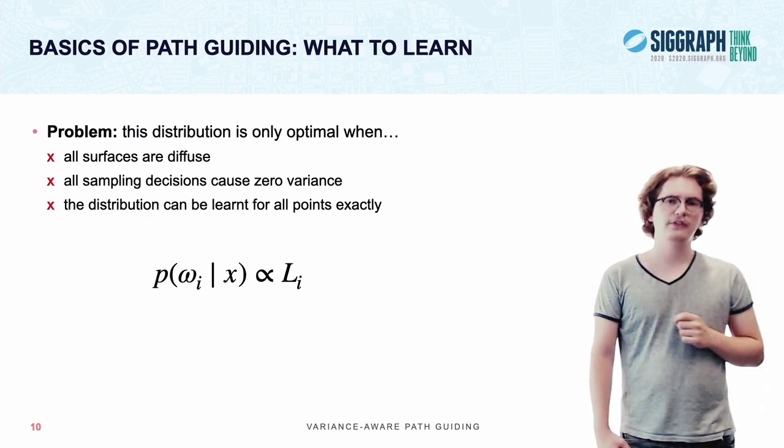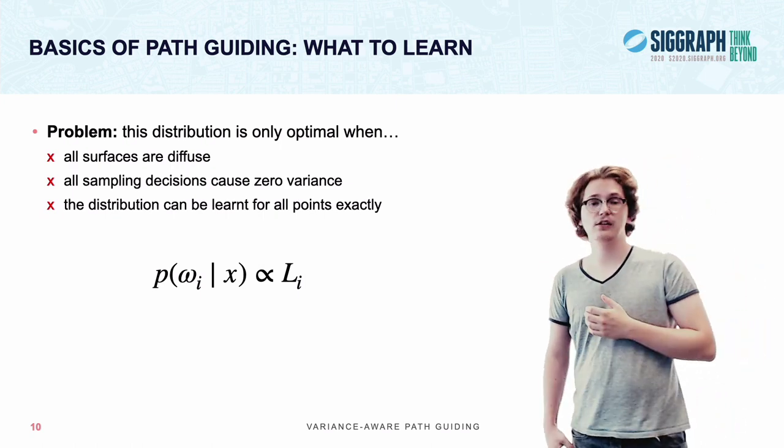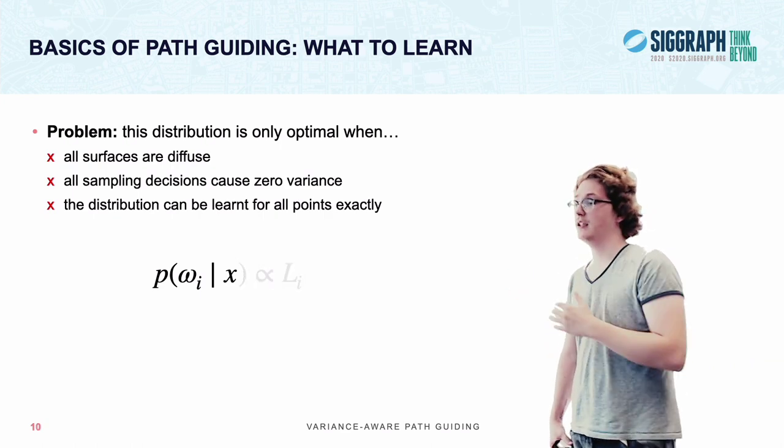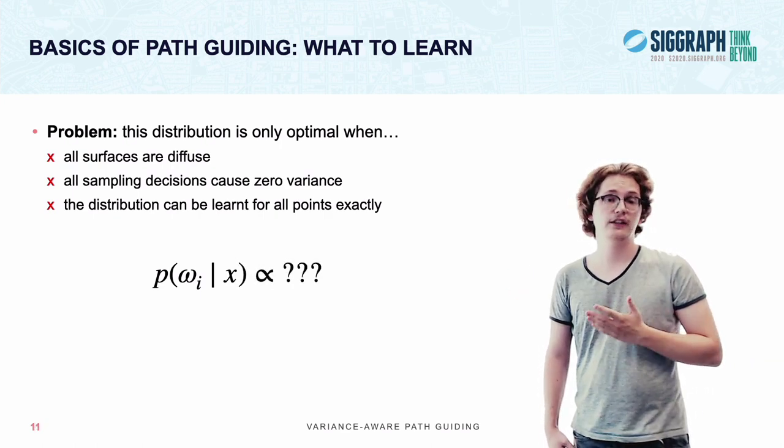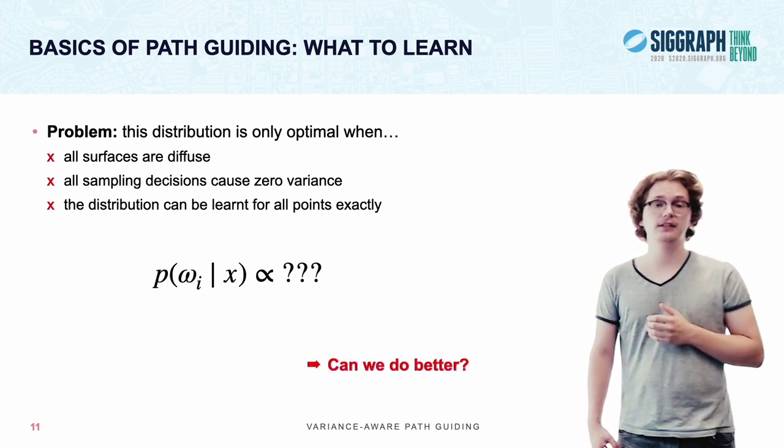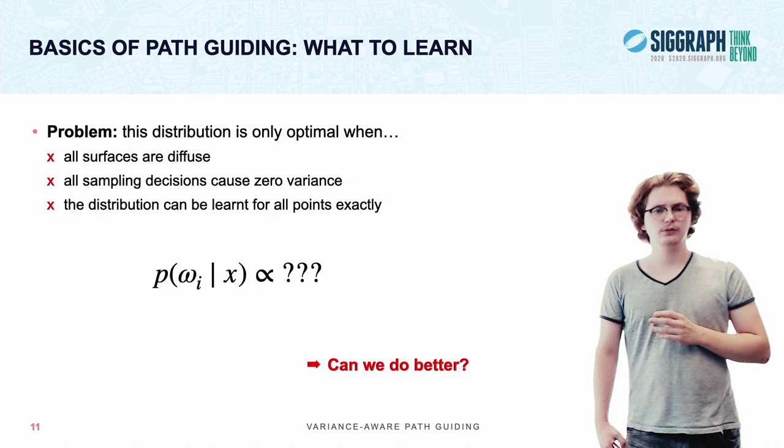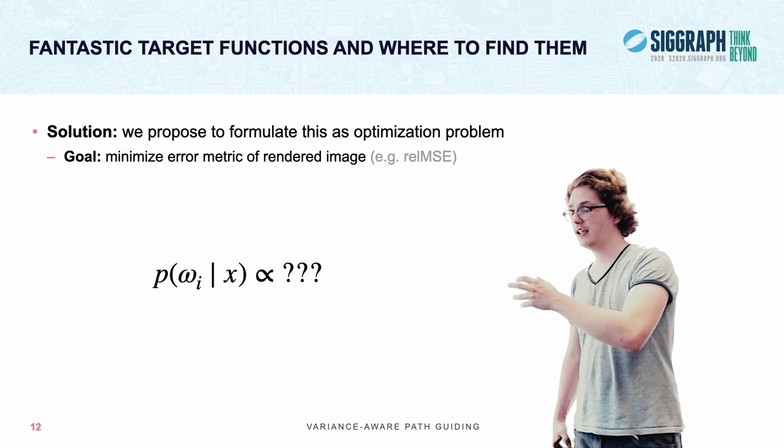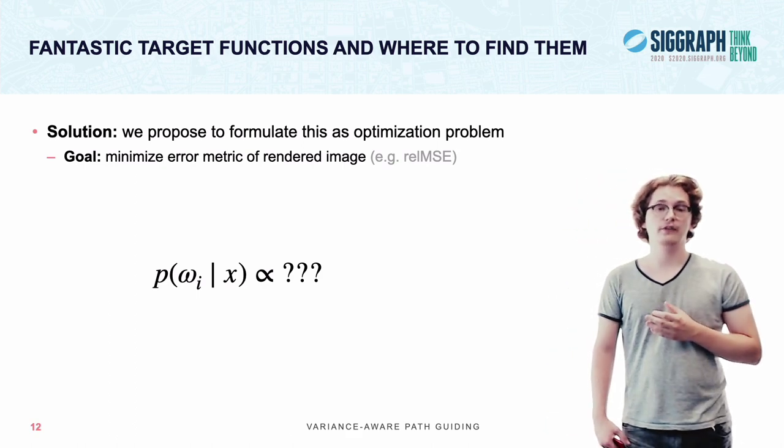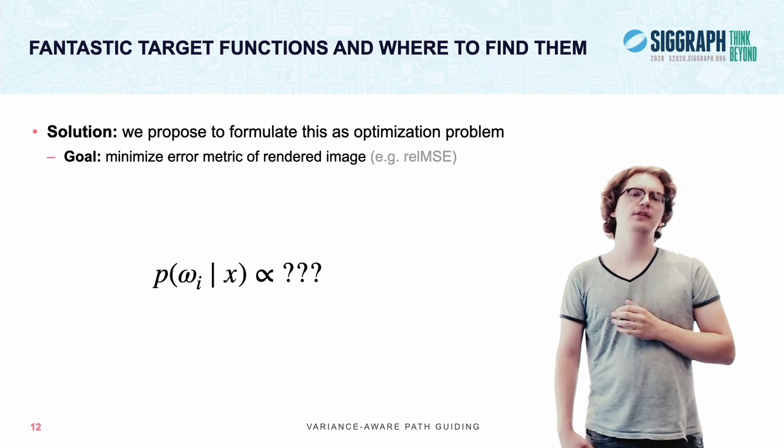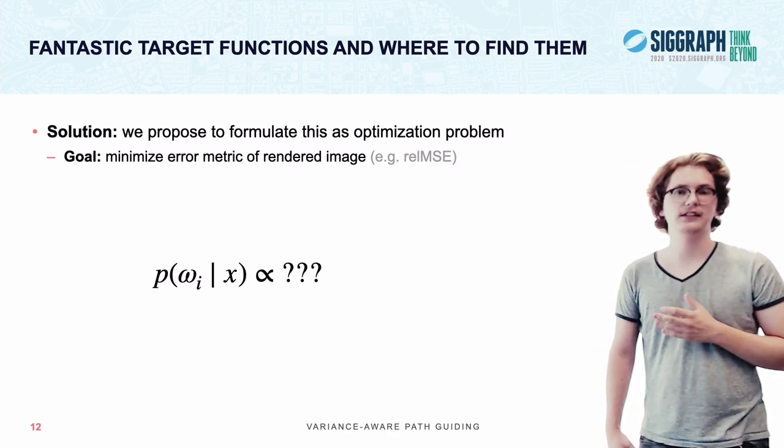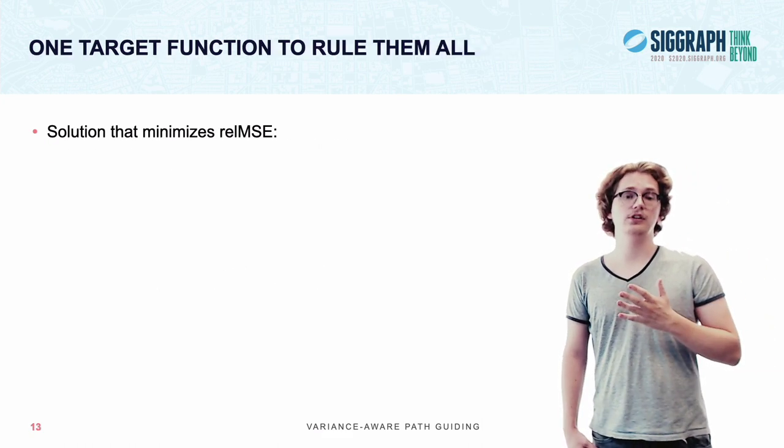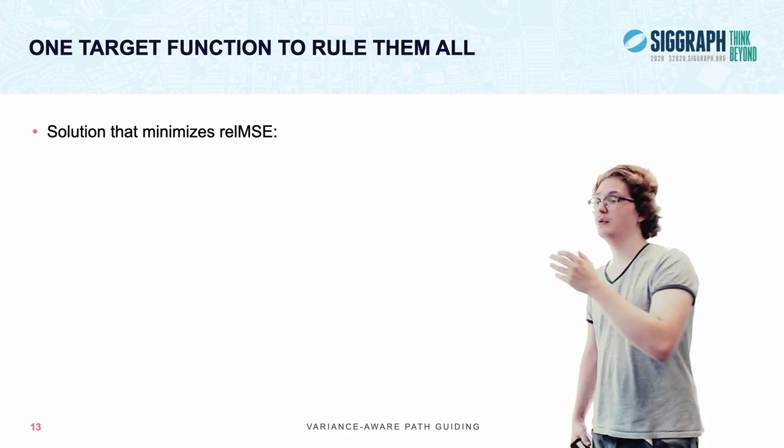Now what we want to do with our work is, given such a five-dimensional local distribution, we want to ask the question whether we can find a different function to approximate with which we can do better, using the same constraints, using the same representation. To answer this, we propose viewing this as an optimization problem, where the goal is that this target function will minimize some error metric of our image. Now I'm going to spare you the exact details of the derivation, as you can find it in all its glorious detail in our paper. What I'd like to do today is, I'd like to show you what the solution looks like for minimizing the relative mean square error.